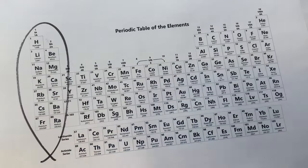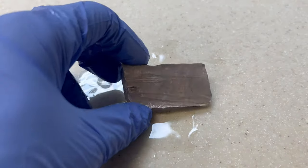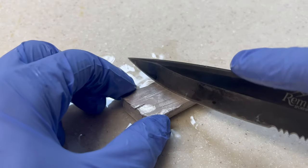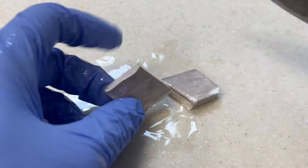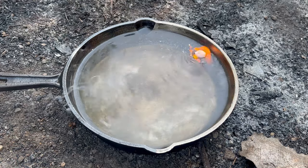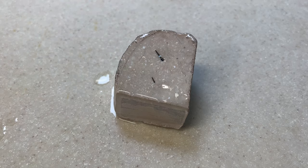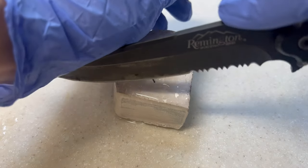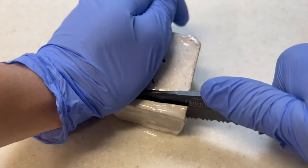This end of the periodic table is quite interesting. It has elements such as sodium, which is incredibly soft — so soft, in fact, they can be cut with a knife. Sodium is better known for its reactivity; if you plop some in water, it reacts violently. Sodium is relatively cheap, and as reactive as it is, there are more reactive elements below it.